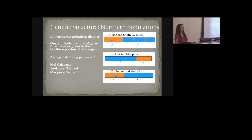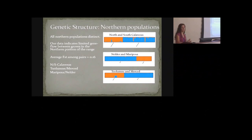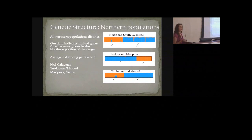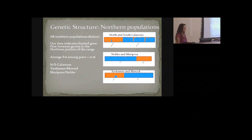Some of our other work examines gene flow dynamics across the range. In the northern portion of the range, which has eight populations including Placer and McKinley, we found the other six populations form pairs because they're relatively close to each other. We wanted to know if there's any genetic exchange between these groves. We found they are quite divergent from each other with very little genetic exchange across the landscape — separated by maybe two to nine kilometers. This suggests these populations have been separated for a quite long time with little genetic exchange over that period.